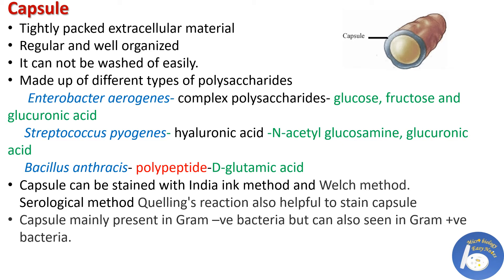The capsule can be seen under a light microscope when stained with special methods like the India ink method and the Welch method. The serological method known as the quellung reaction is also helpful to observe the capsule. The capsule is mainly present in gram-negative bacteria but can also be seen in gram-positive bacteria.